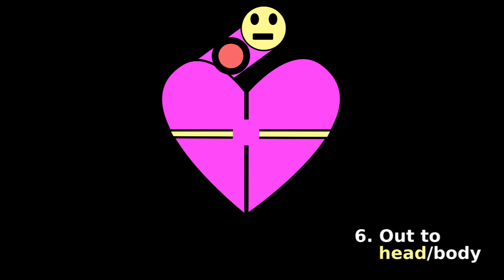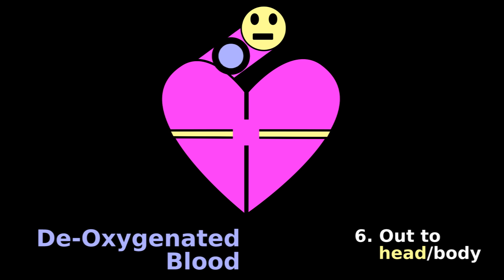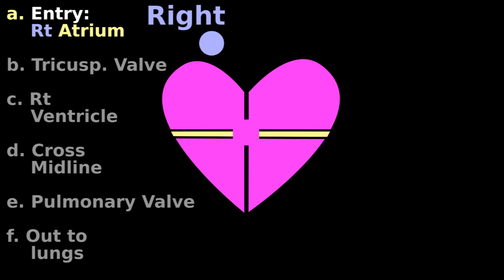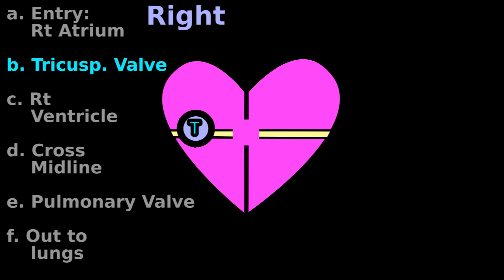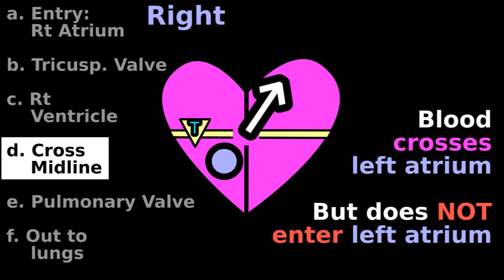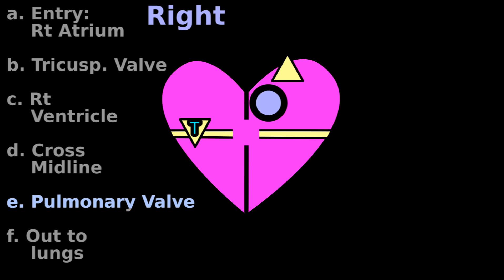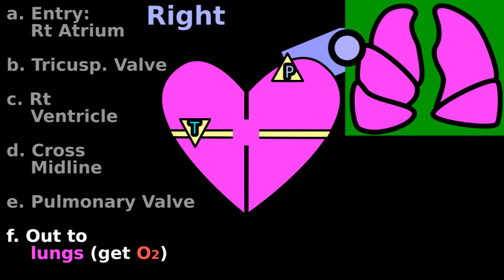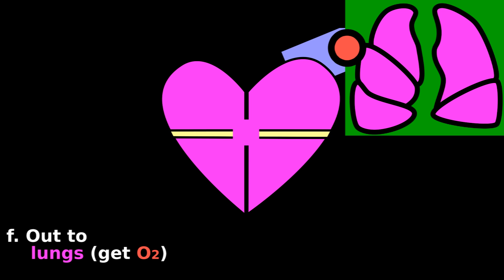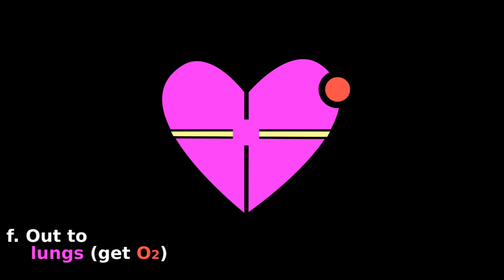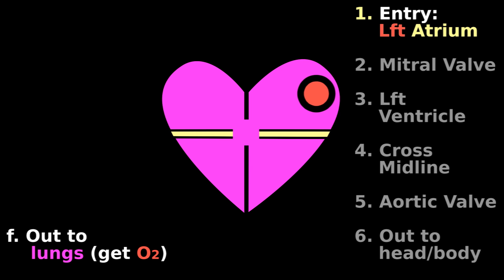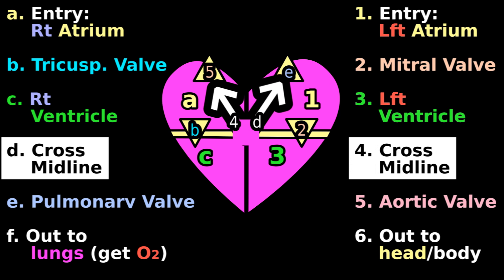These systems use up the oxygen, so now the blood is deoxygenated and returns to the heart, where it enters into the right atrium, then goes through the tricuspid valve into the right ventricle, crosses the midline to exit through the pulmonary valve, and goes through the lungs to get oxygen. Now the blood is oxygenated and returns to the heart, where it enters into the left atrium, and this whole cycle repeats again.